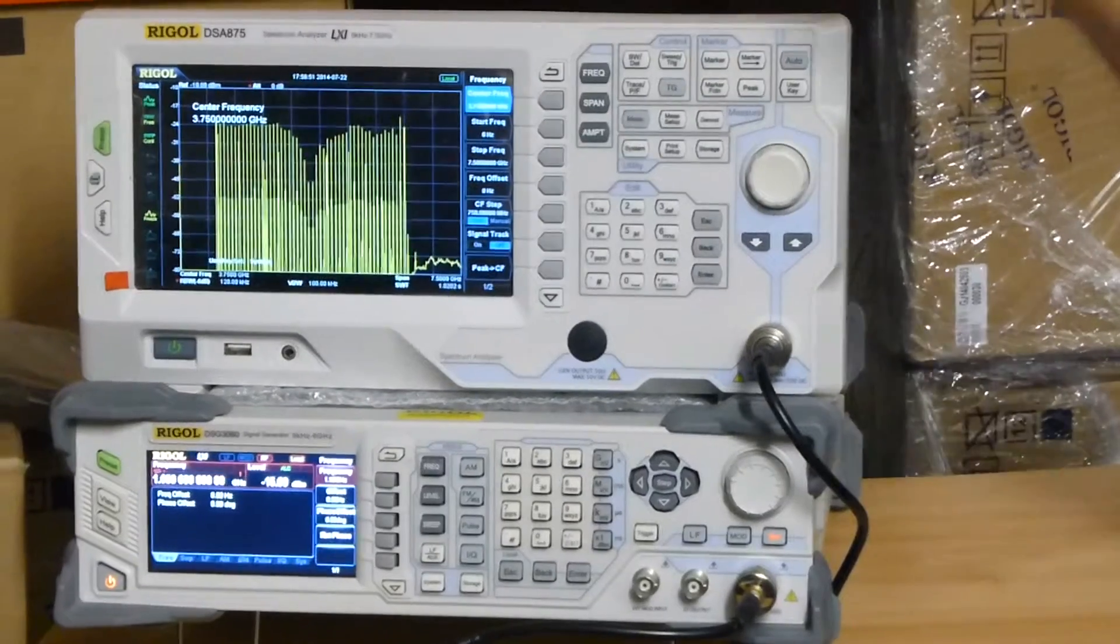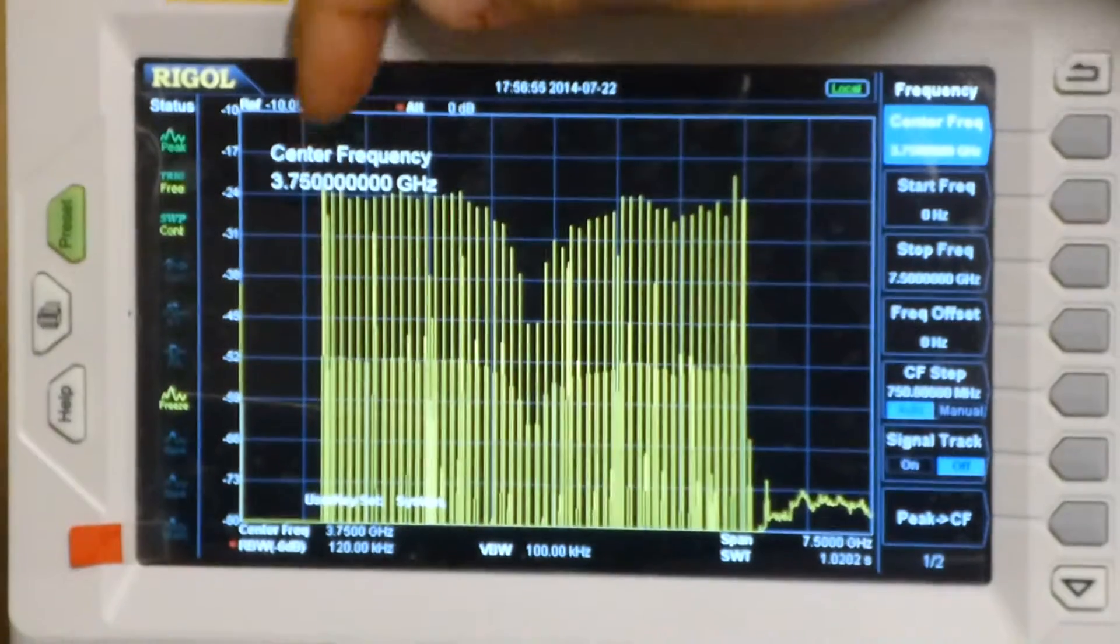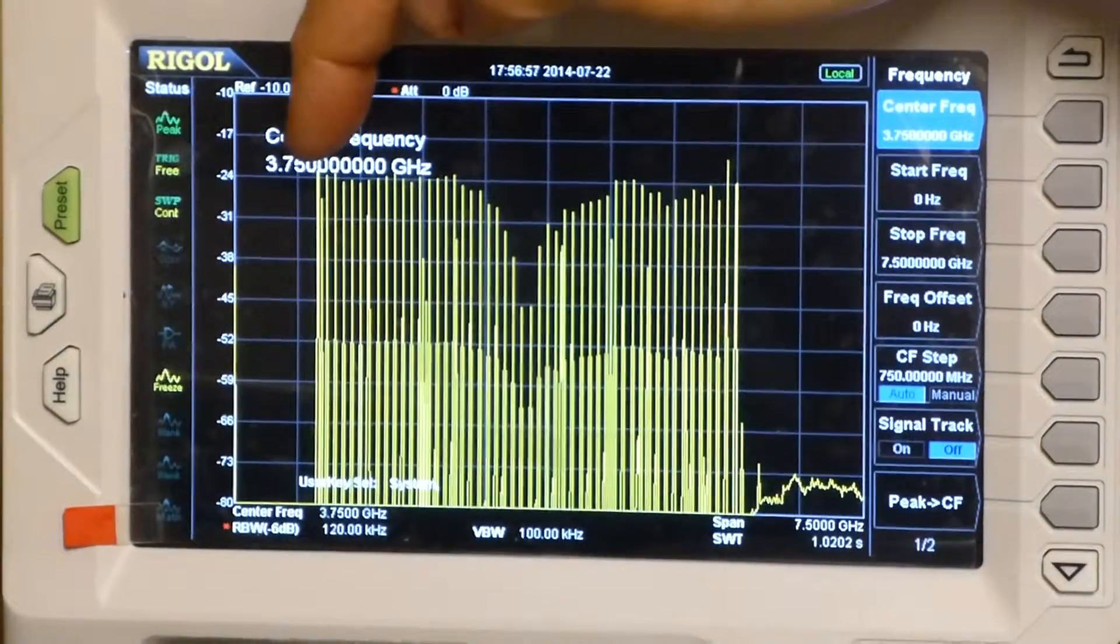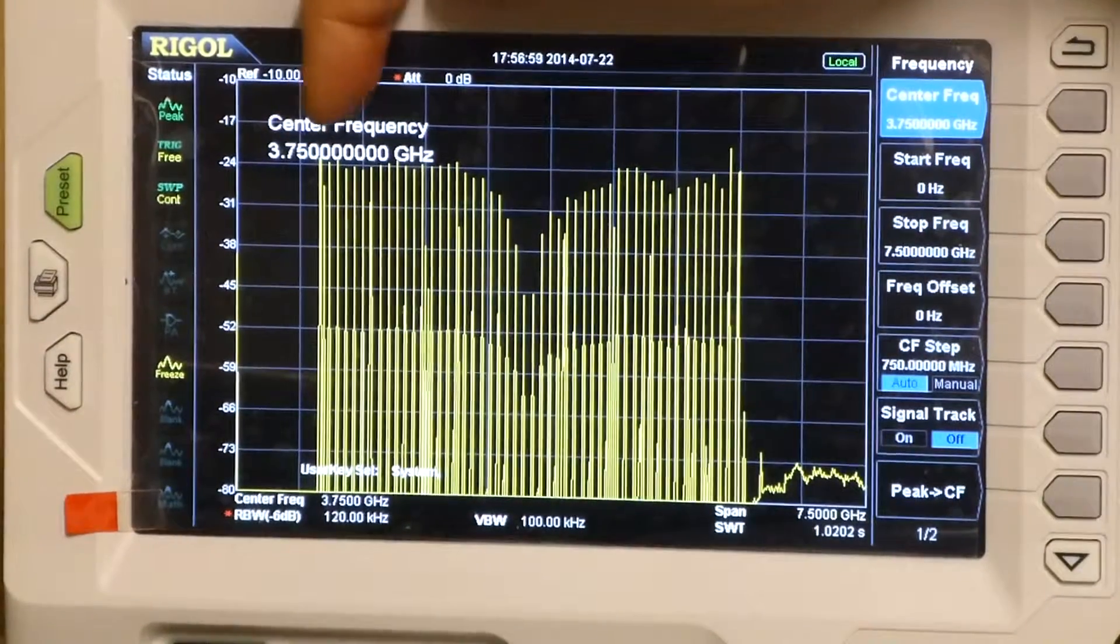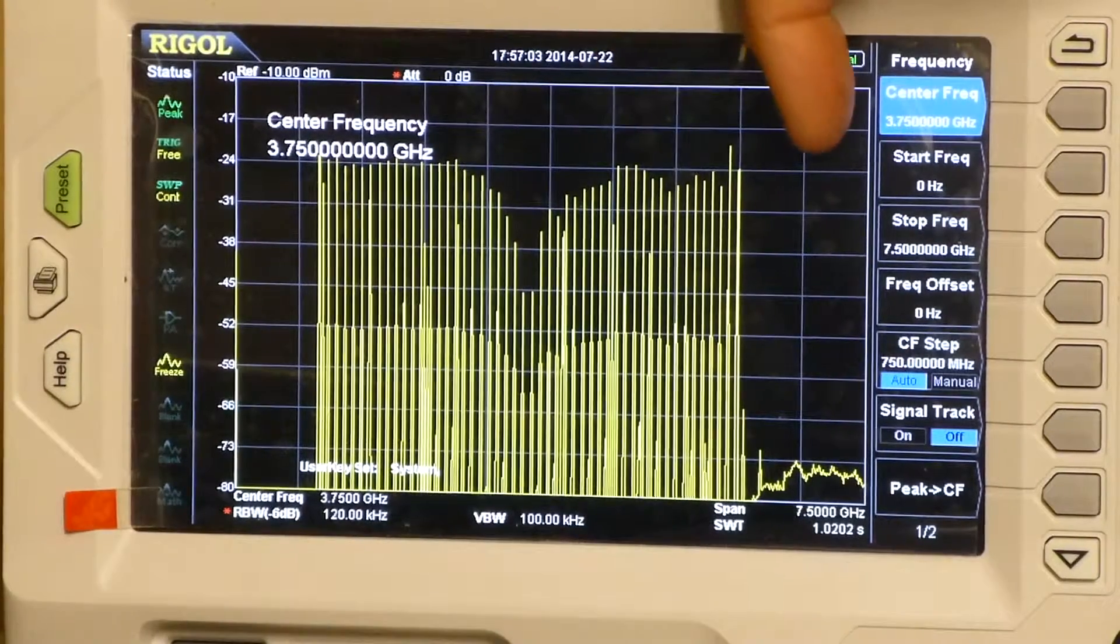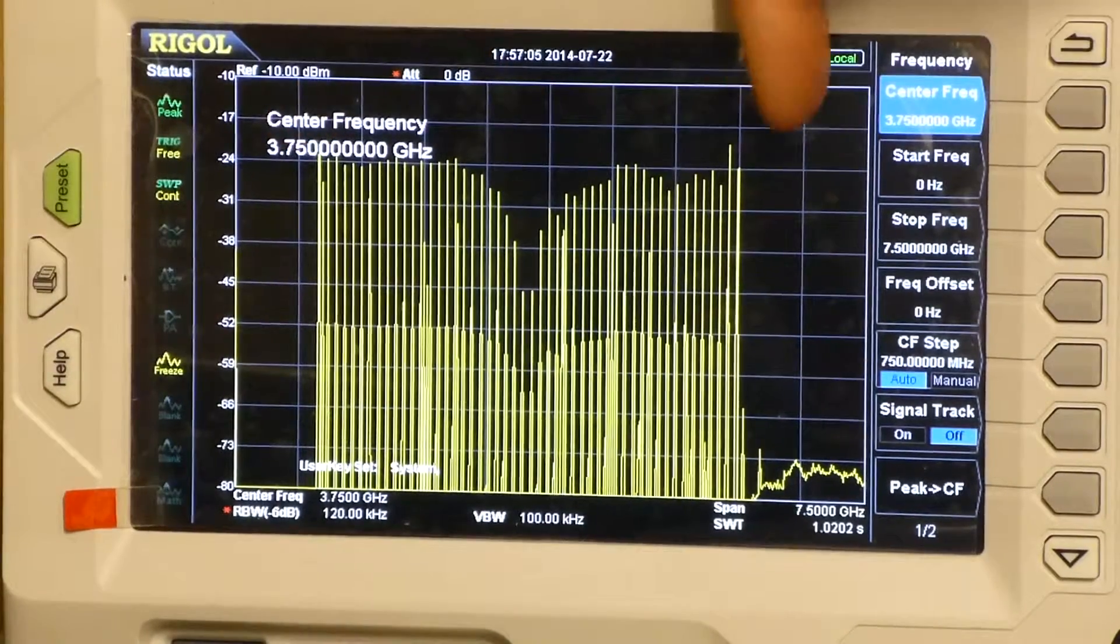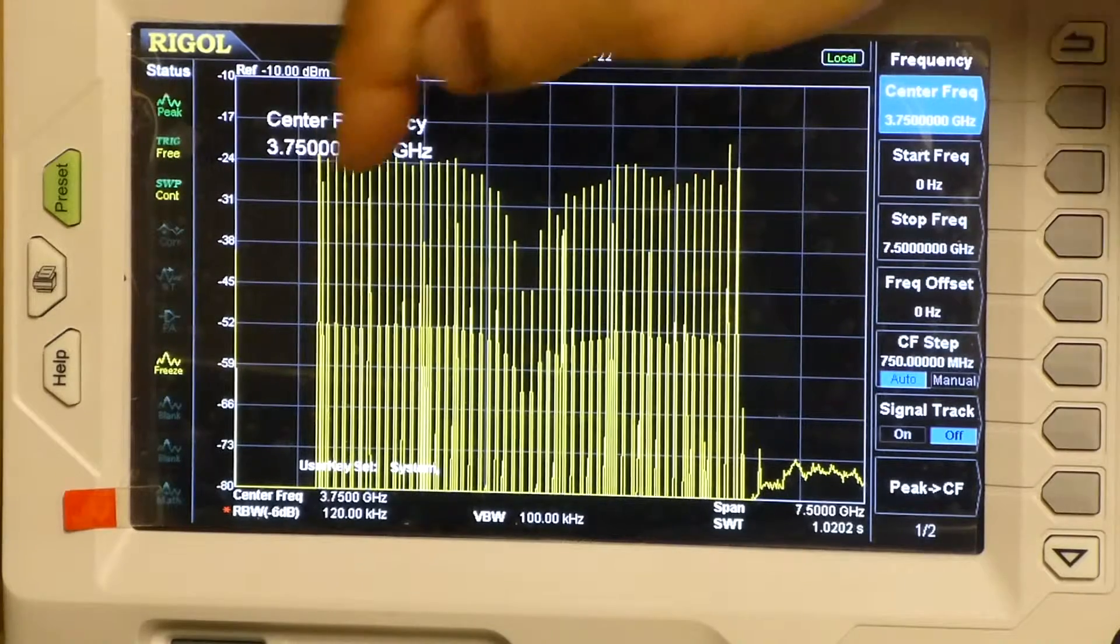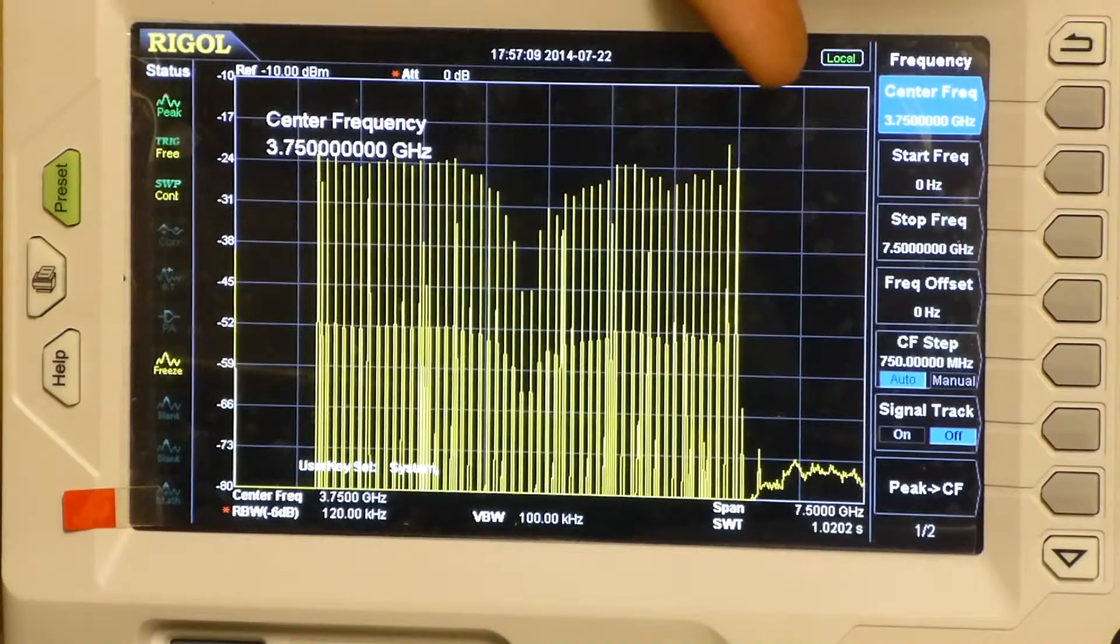So up here on the DSA875 screen is a spectrum that I have swept for my coupler spanning from 1 gigahertz down here through a center frequency of 3.75 up to 6 gigahertz. So that's 1 gigahertz to 6 gigahertz using a stepped sweep from the DSG.